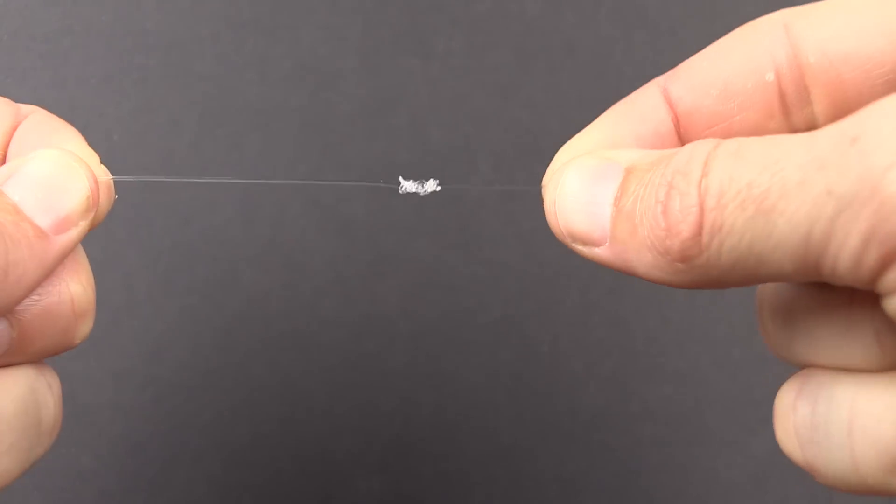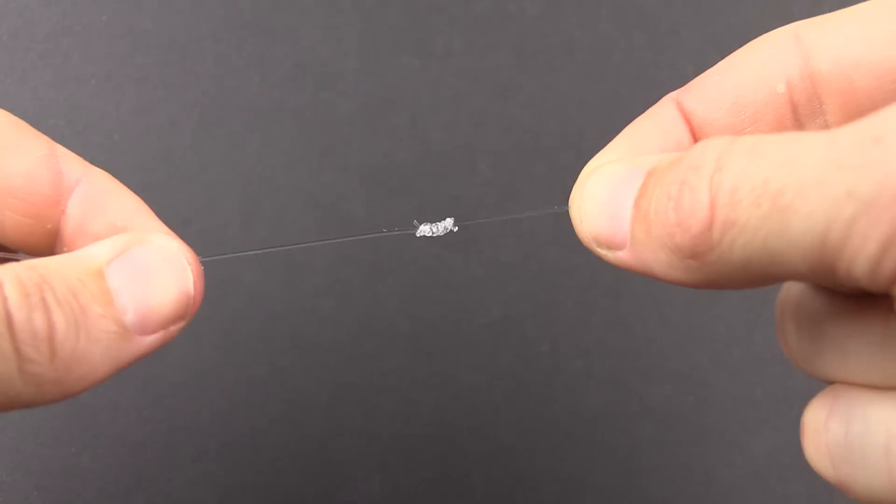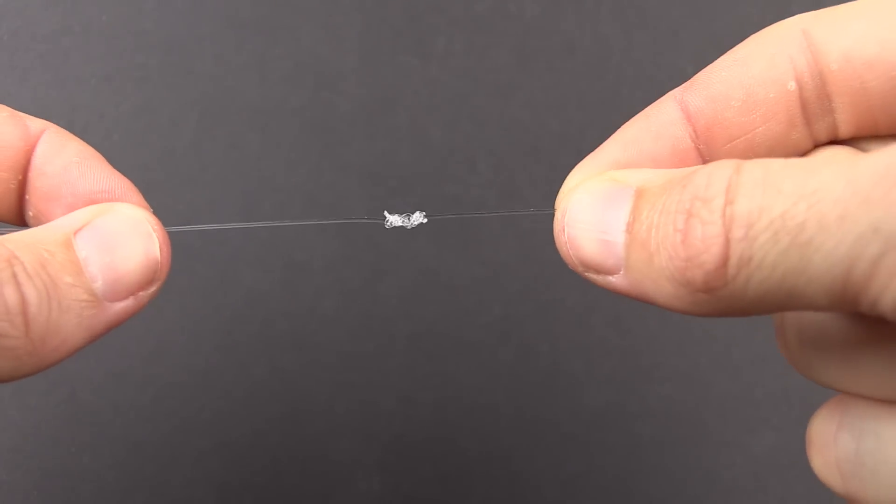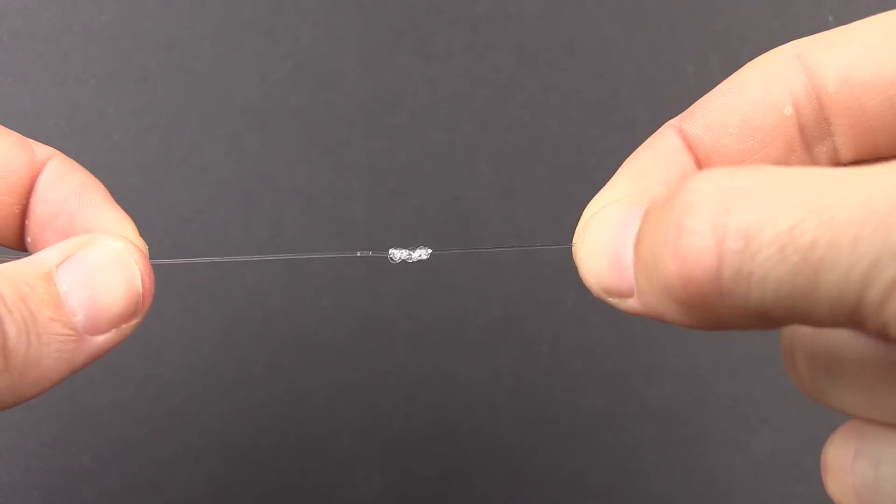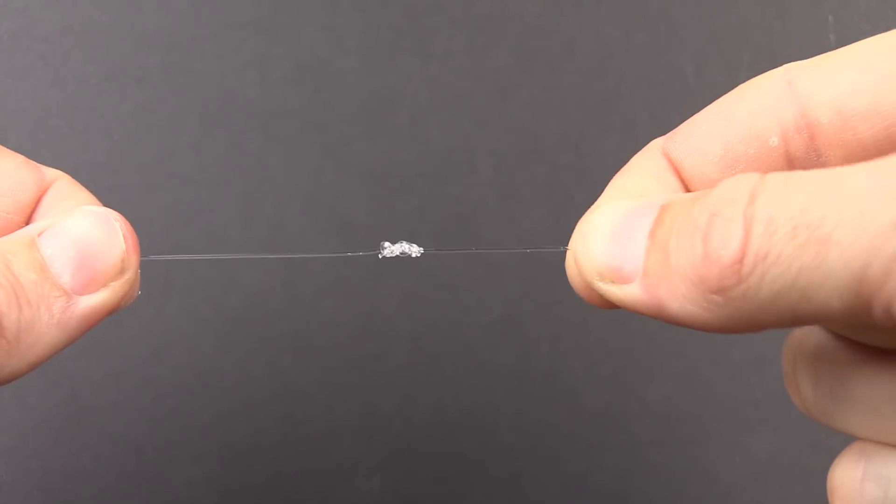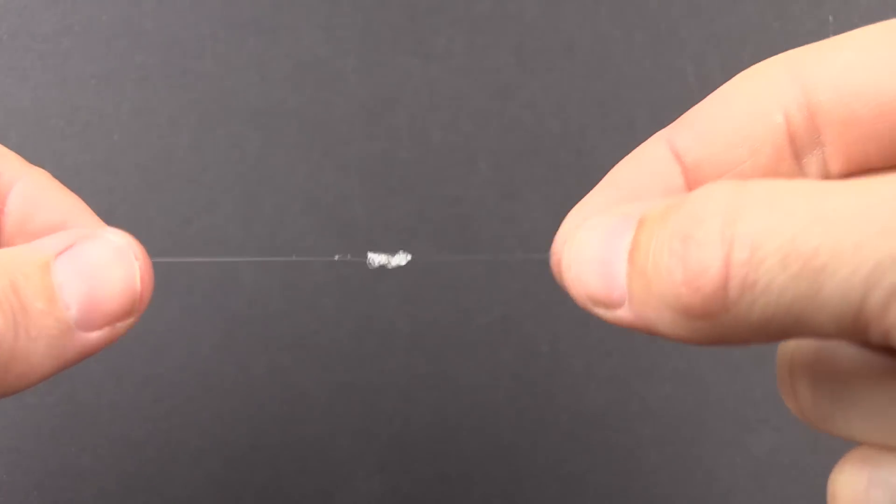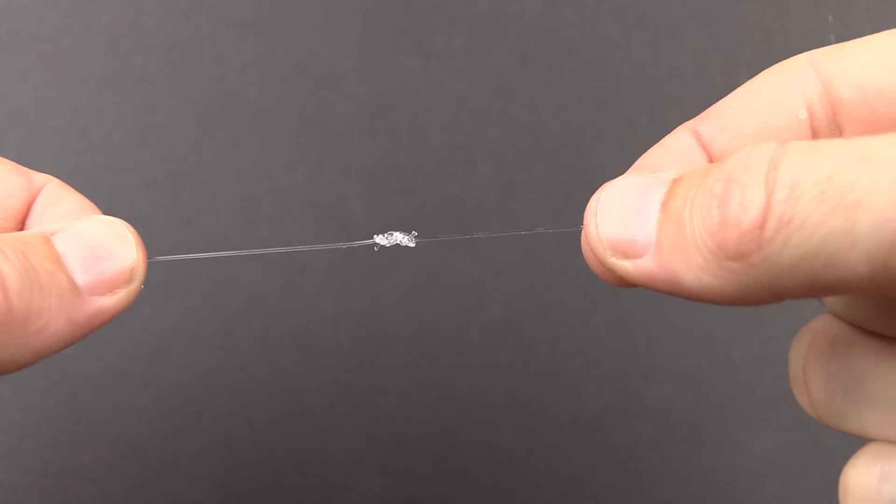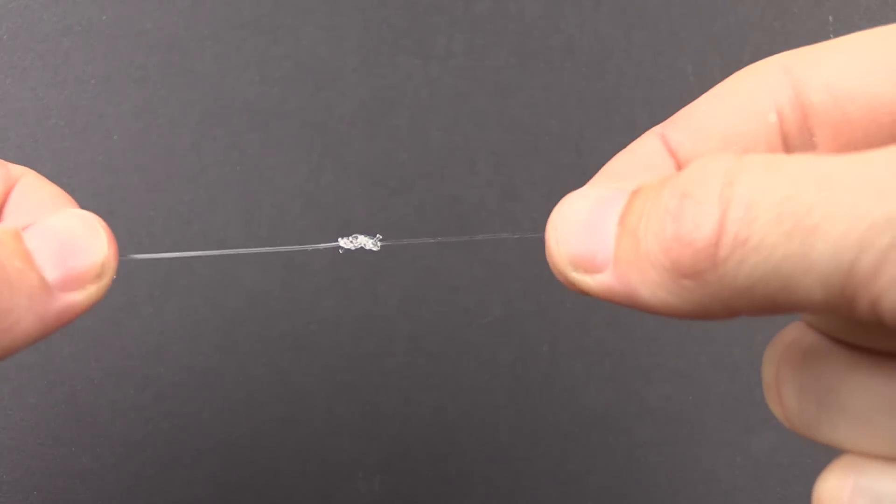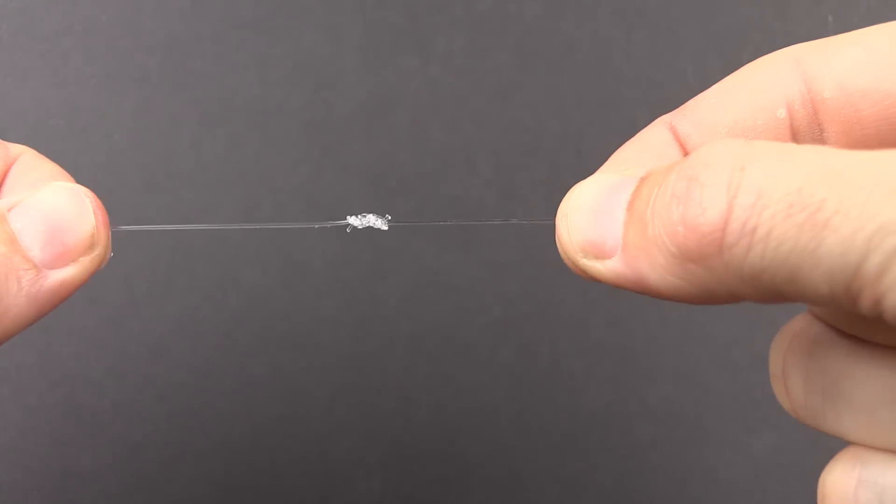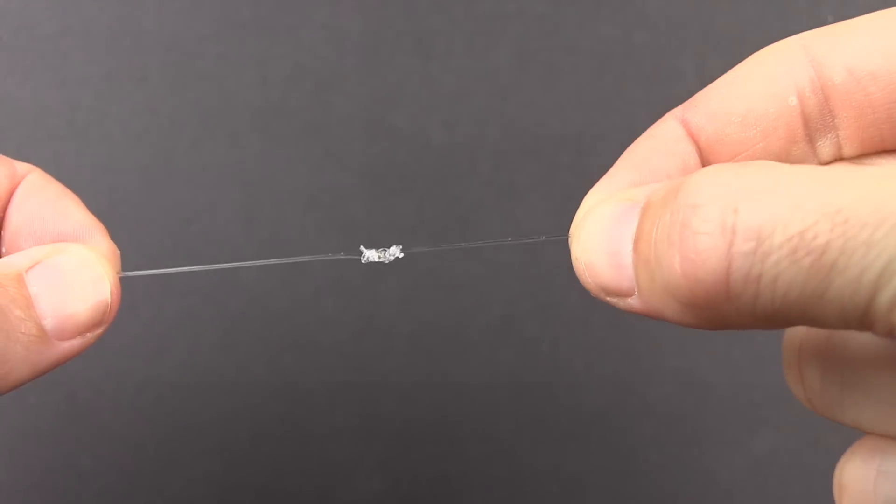So again, there is the knot. Very strong line-to-line knot, very good in that it can connect two lines of any type and any size. It has been tested to be very strong, and it's shocking how easy it is to tie as well. Hopefully this helps. If you have any questions, leave a comment down below. Otherwise, see you on the next video.